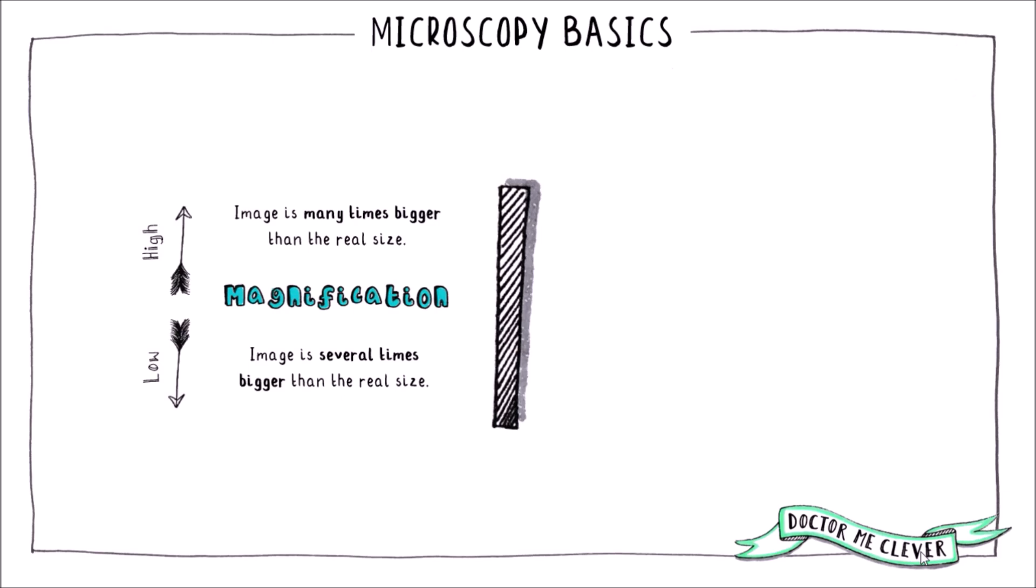So at school the microscopes that you are provided with can likely magnify something to between 400 or 600 times to give you some perspective. And the magnification power is given as a number followed by an x. This is the number of times the image is made bigger, for example 40 times, 200 times or 600 times.